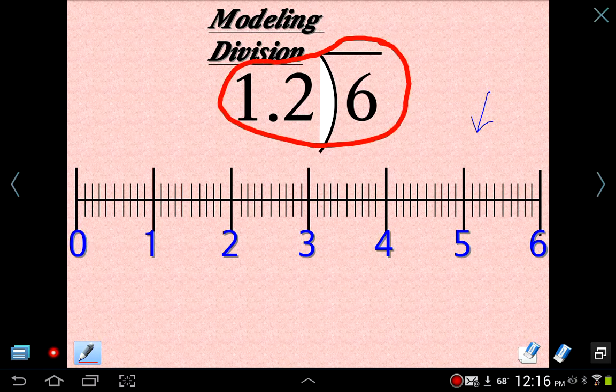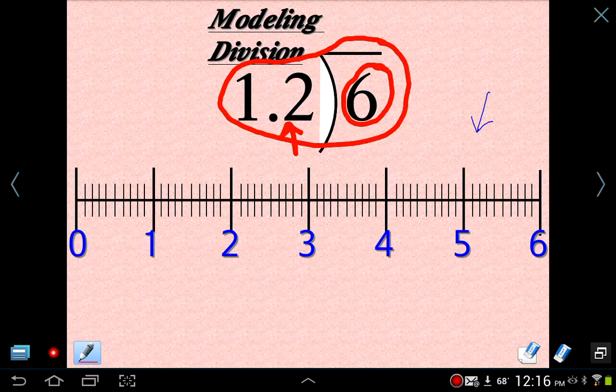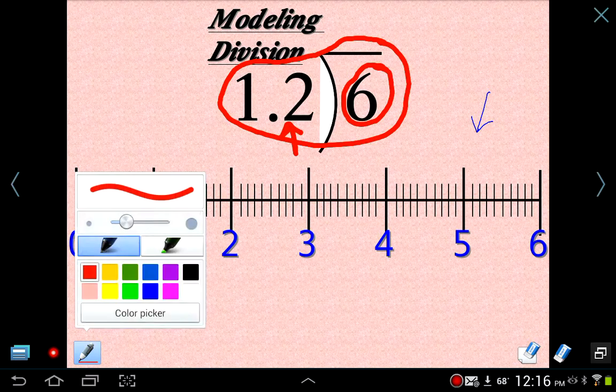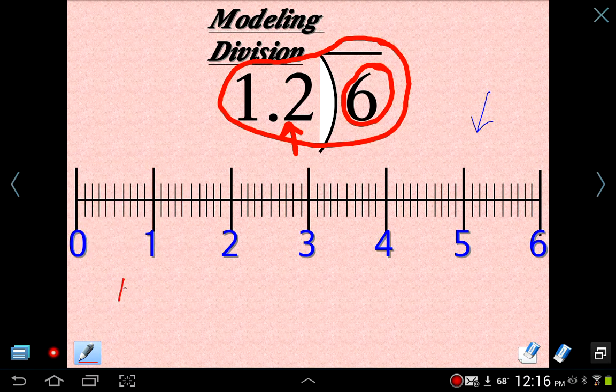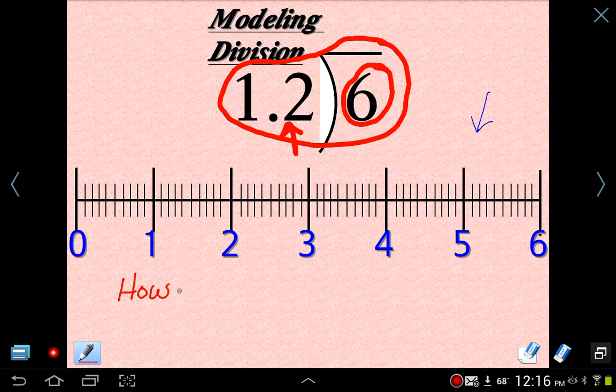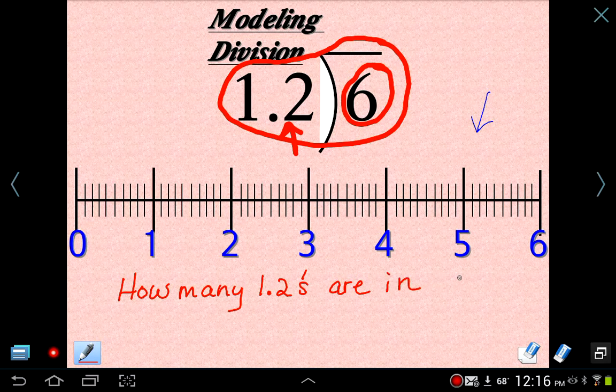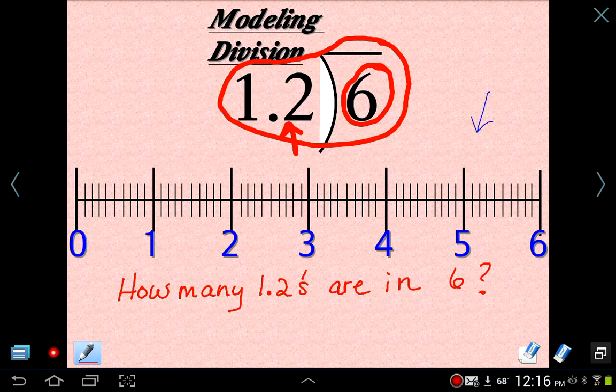So first of all, we're dividing 6, this number 6, by 1.2, 1 and 2 tenths. What does that mean? That basically means, and I know you don't think about division this way, but maybe you do. It basically means how many 1.2's are in 6. How many times does 1.2 or 1 and 2 tenths divide into 6?